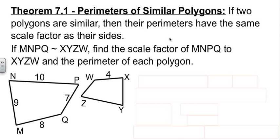So our job is to figure out, in this case, the scale factor from MNPQ to XYZW, and then find the perimeter of each polygon. Well, the scale factor should be easy to do. MNPQ to XYZW. I have WX as my side over here. So I'll be interested in MQ. 8 to 4, which is 2 to 1. That's the scale factor.